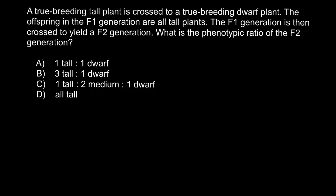Hello and welcome to Nikolai's genetics lessons. Today I have prepared a very easy problem for you. A true breeding tall plant is crossed with a true breeding dwarf plant. The offspring in the F1 generation are all tall plants. The F1 generation is then crossed to yield the F2 generation. What is the phenotypic ratio of the F2 generation?